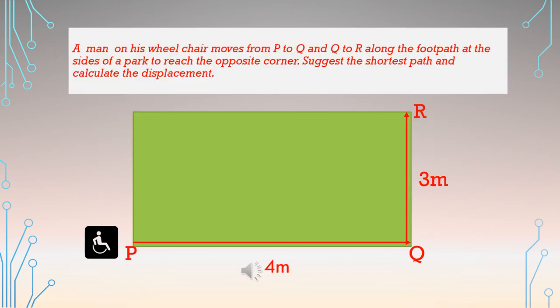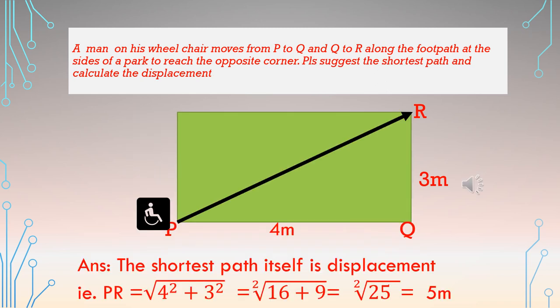See the numerical problem. A man on his wheelchair moves from P to Q and Q to R along the footpath at the sides of a park to reach the opposite corner. Suggest the shortest path and calculate the displacement. The shortest path itself is the displacement — here PR is the shortest path.